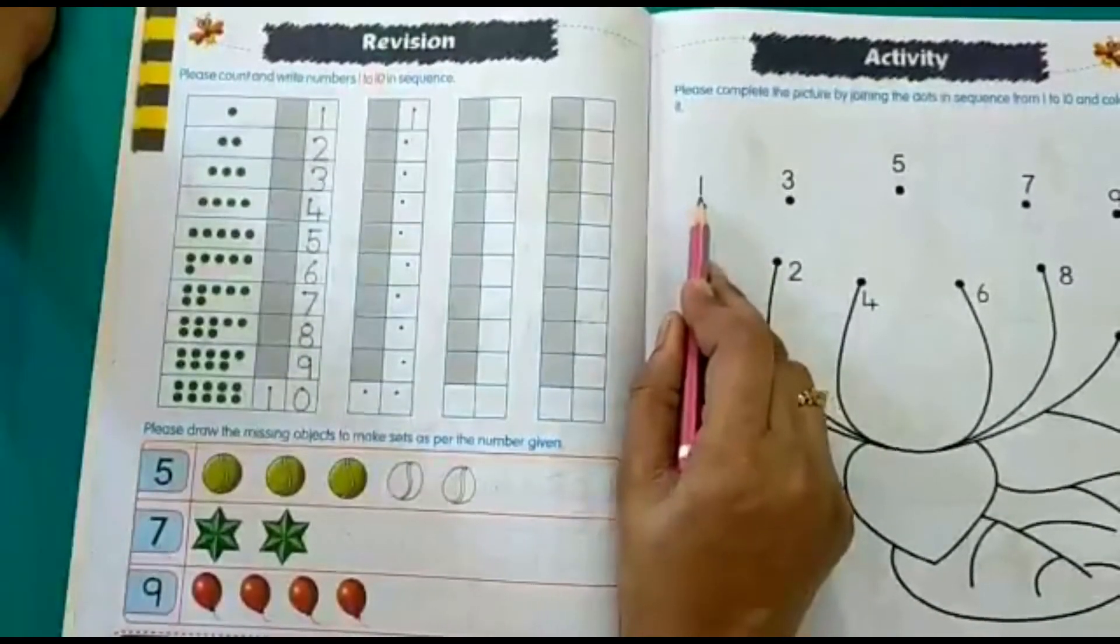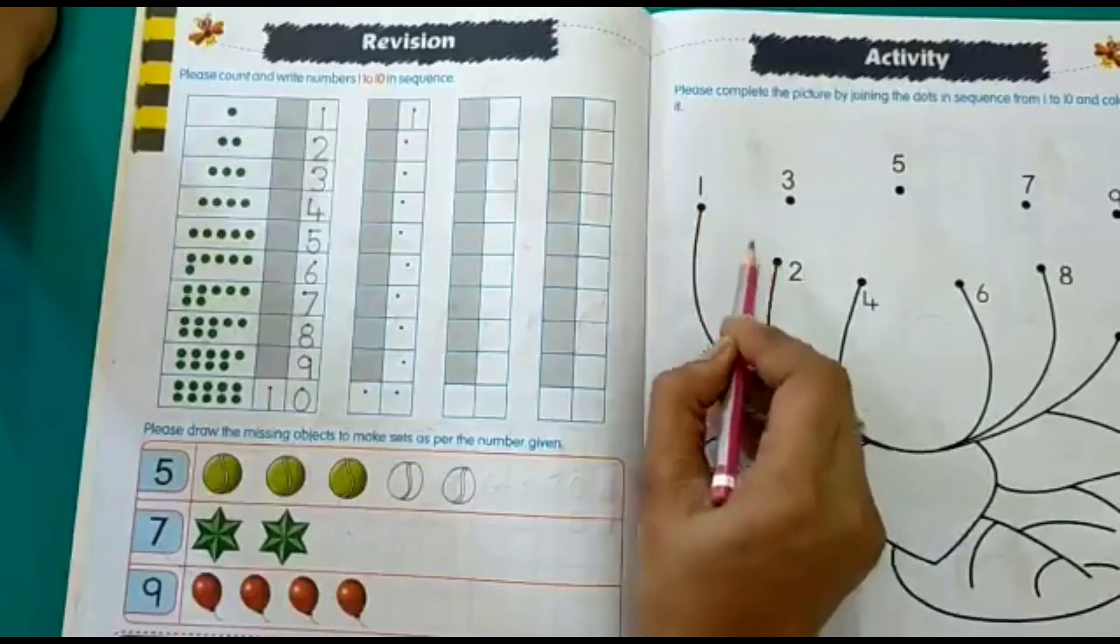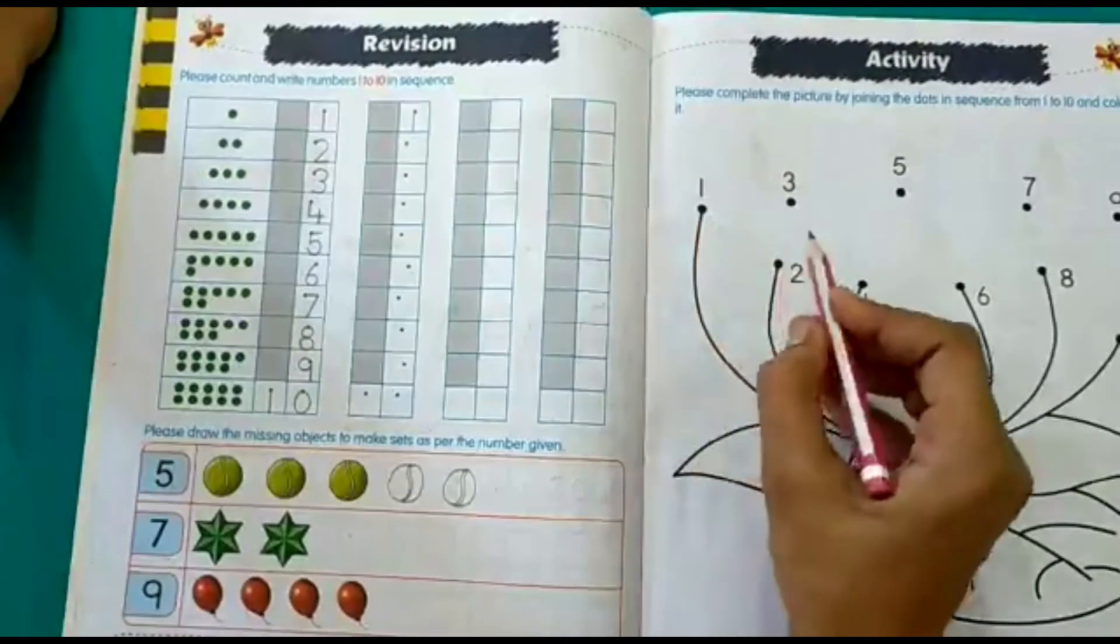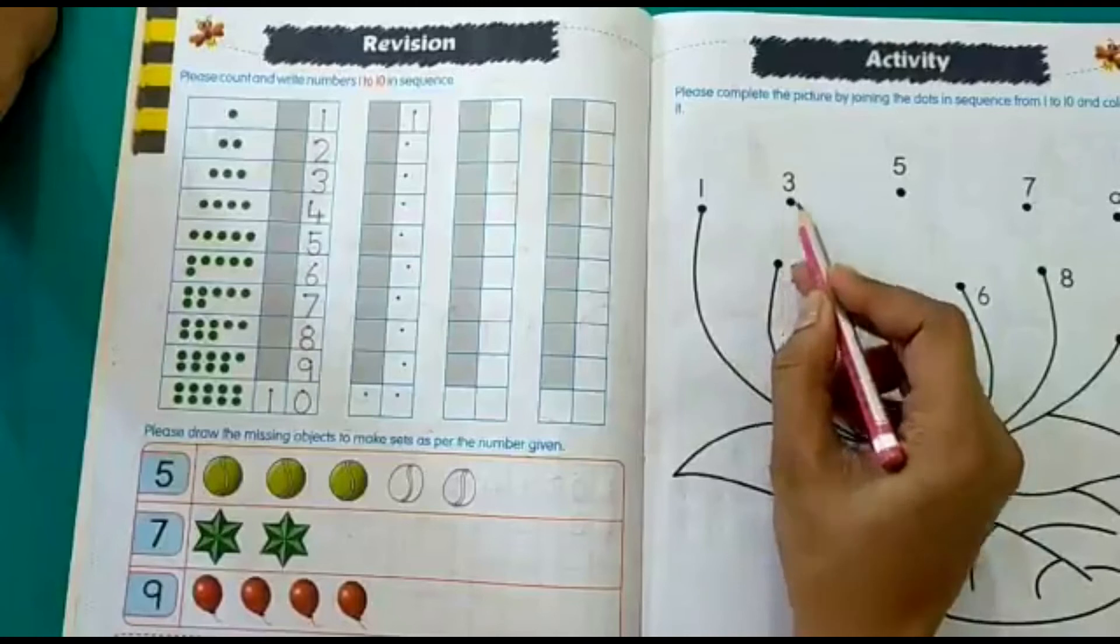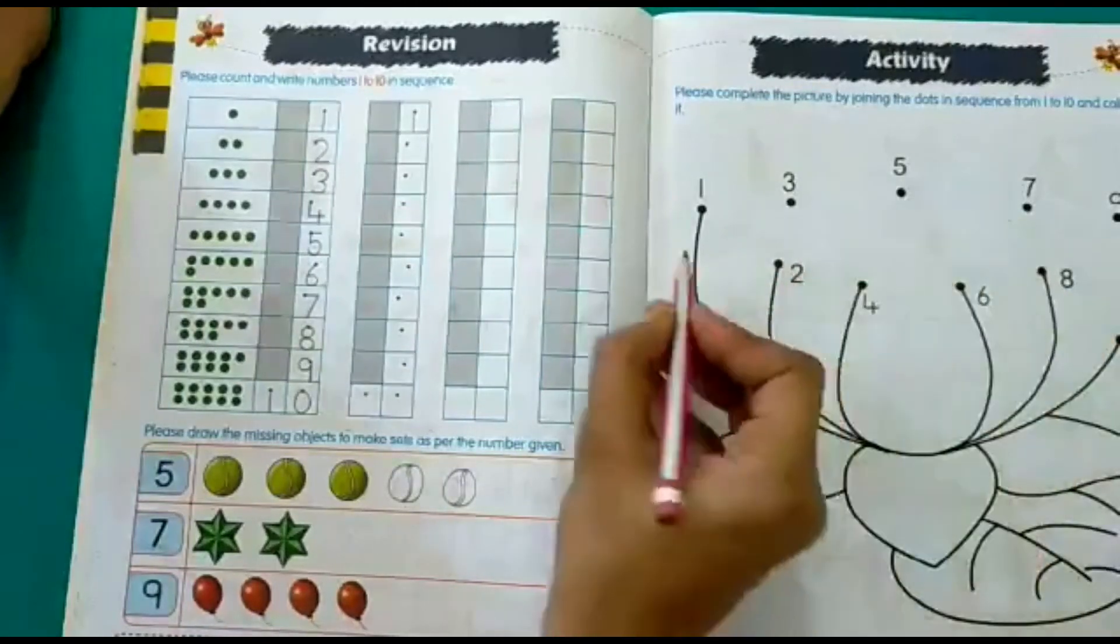Like what comes after 1, 2. So from 1 till 2, you have to join the dot. What comes after 2, 3. From 2 to 3. Like I will show it.